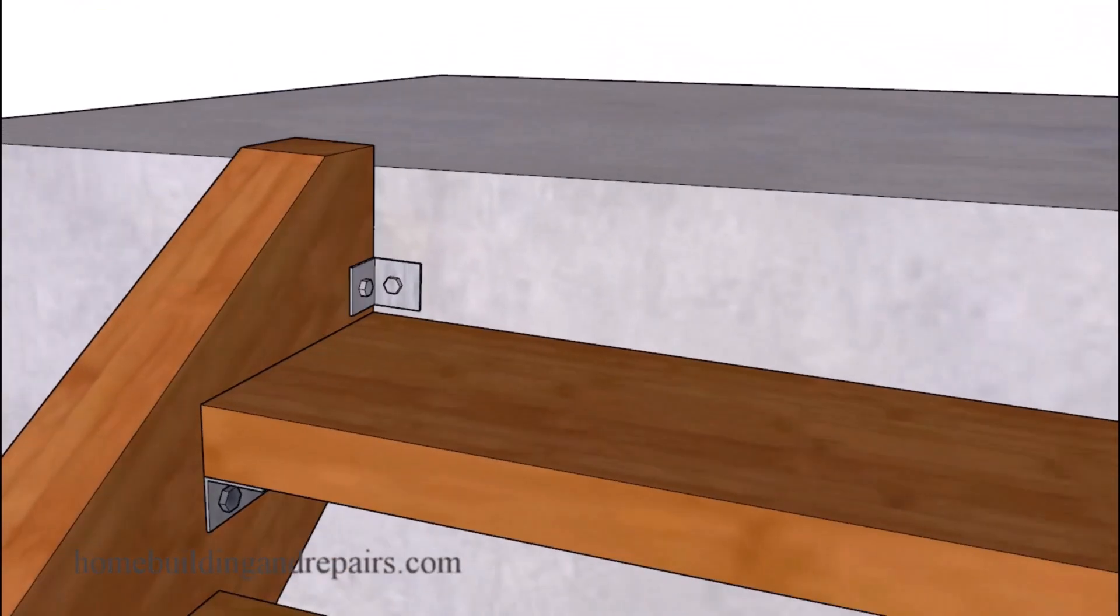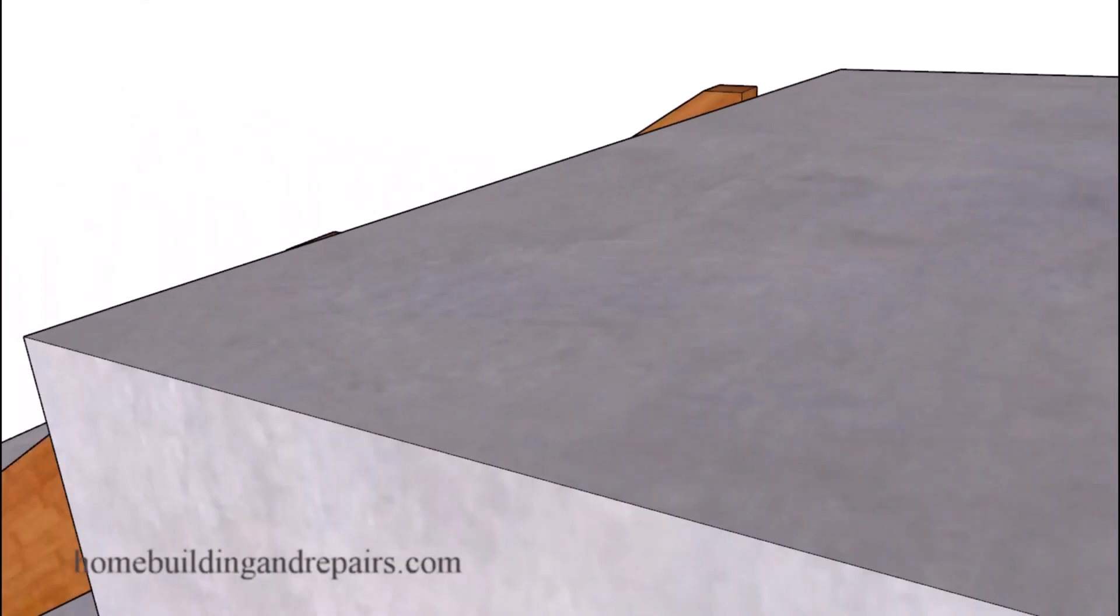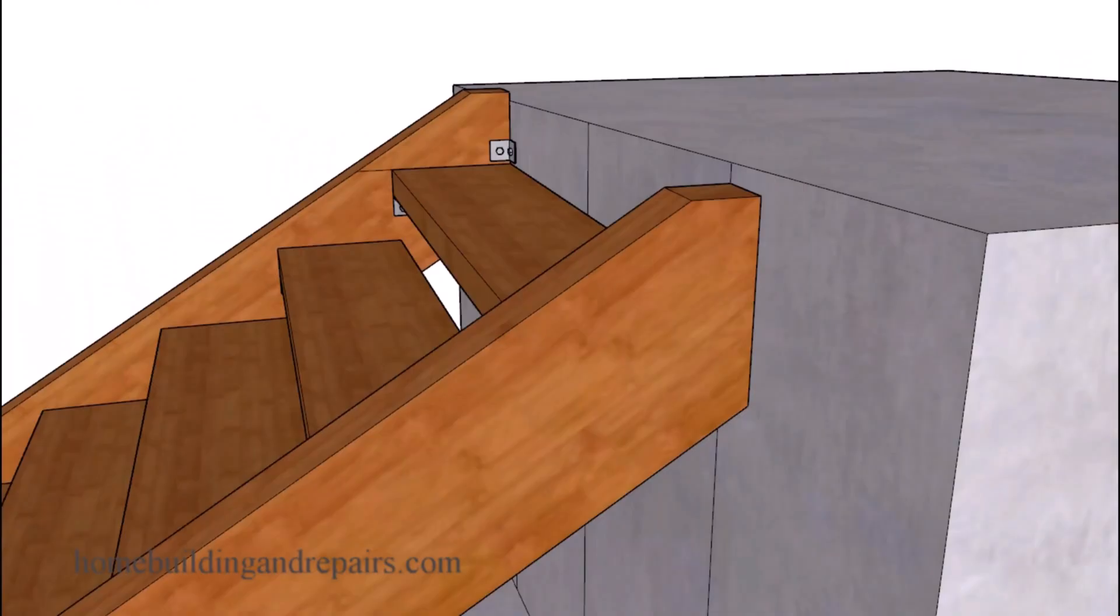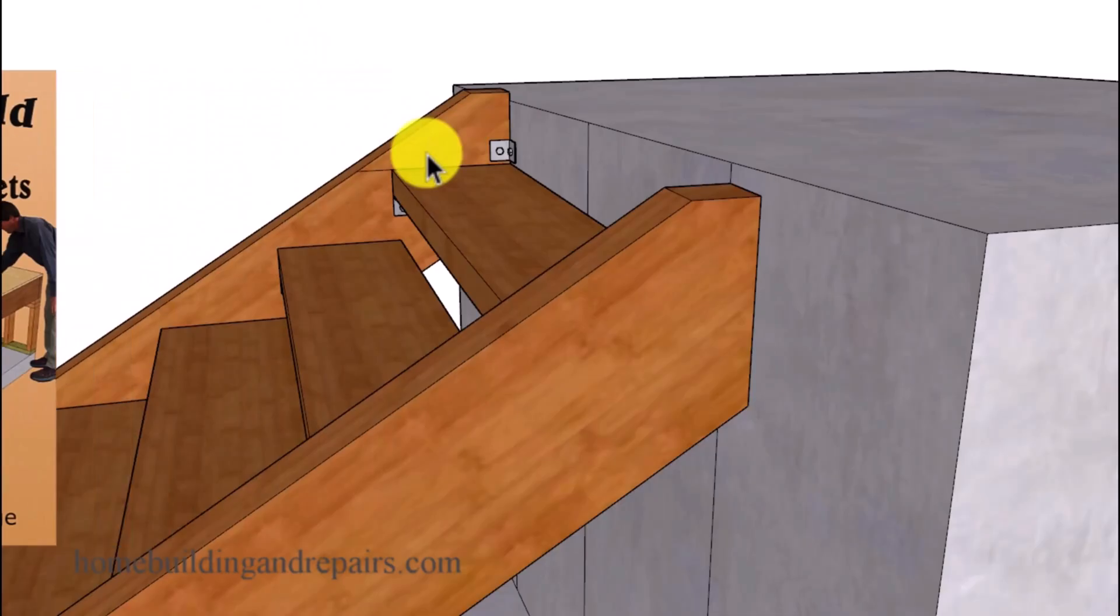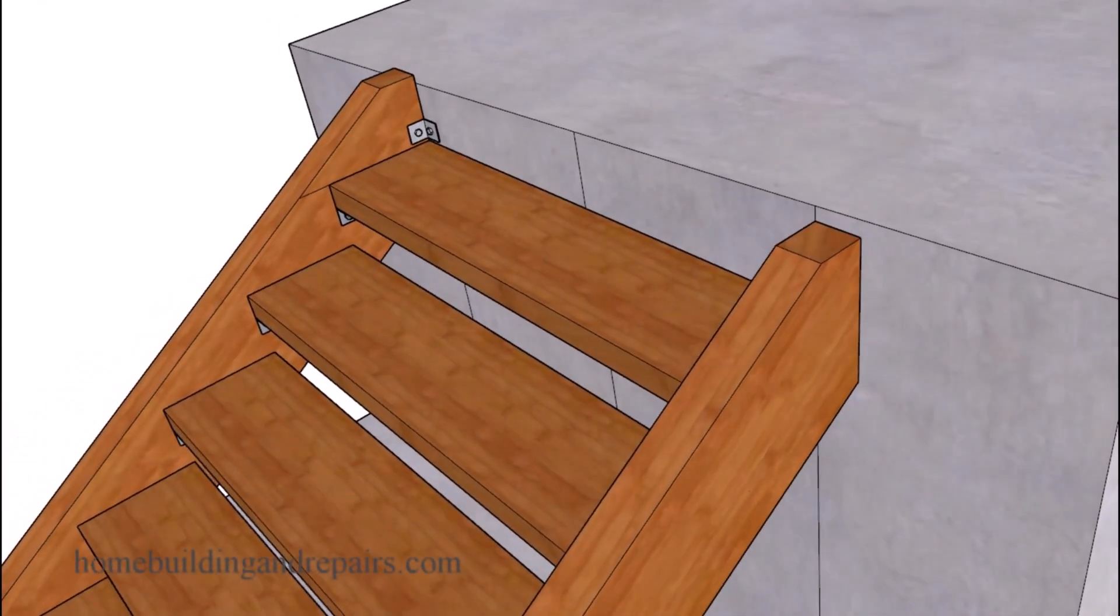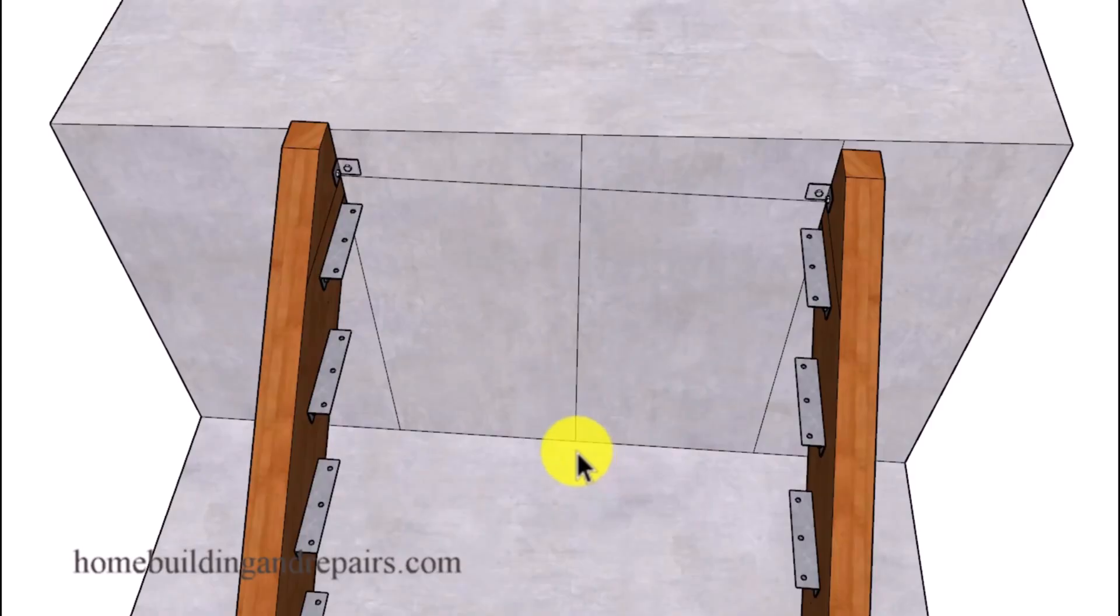If not, you can simply adjust the stair stringer measurements when you're laying out the stairway. I do have books on how to build and lay out these types of stringers. What I would suggest would be to measure from the lower surface to the upper surface in the center of the stairway, because most people are going to be walking up and down the center.